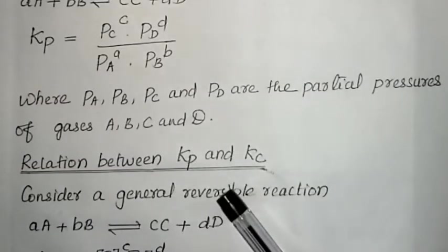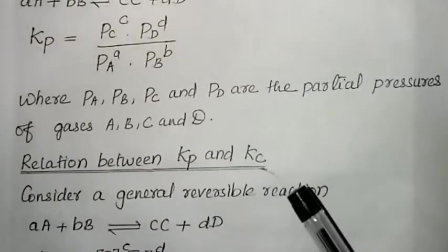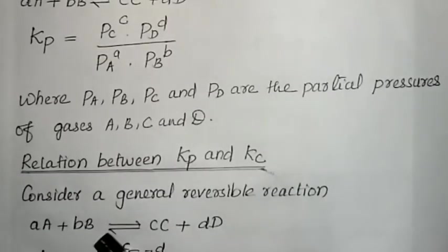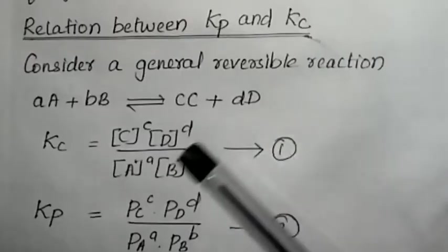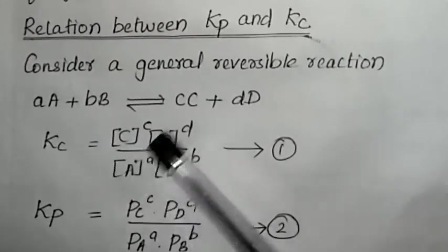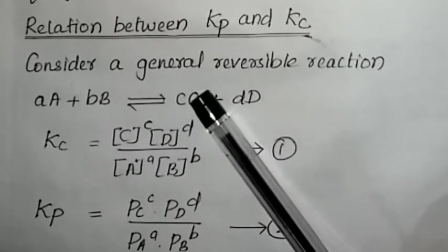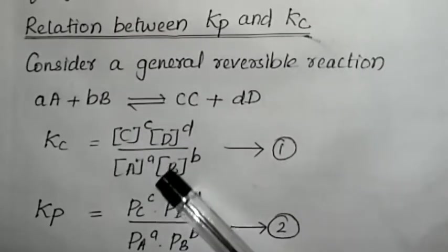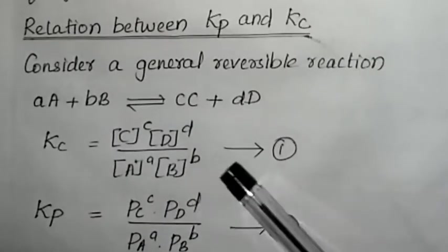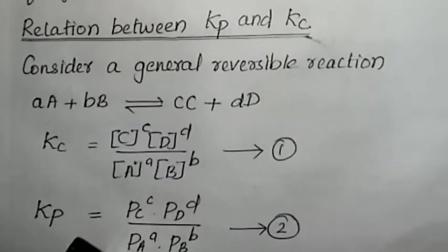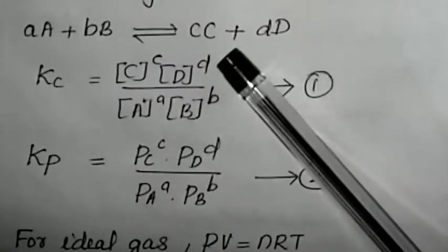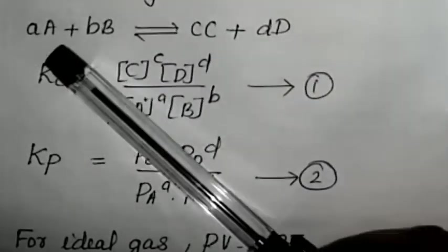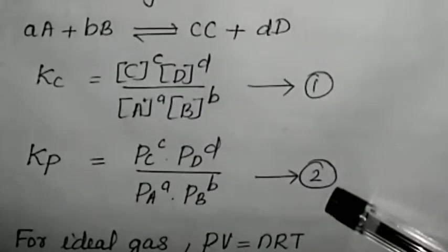The relationship between Kp and Kc. For a general reversible reaction aA + bB reversibly gives cC + dD: Kc = [C]^c × [D]^d / [A]^a × [B]^b (equation 1), and Kp = (Pc)^c × (Pd)^d / (Pa)^a × (Pb)^b (equation 2). For an ideal gas, PV = nRT, so P = (n/V)RT, and since n/V is molar concentration C, we get P = CRT.